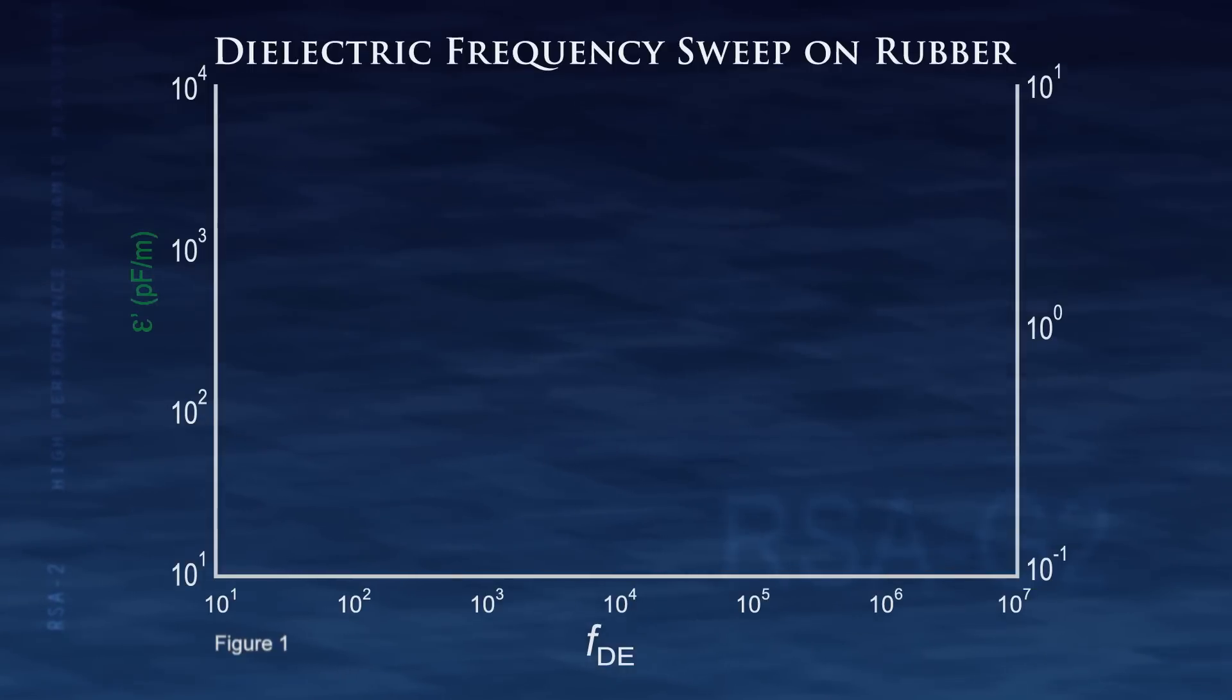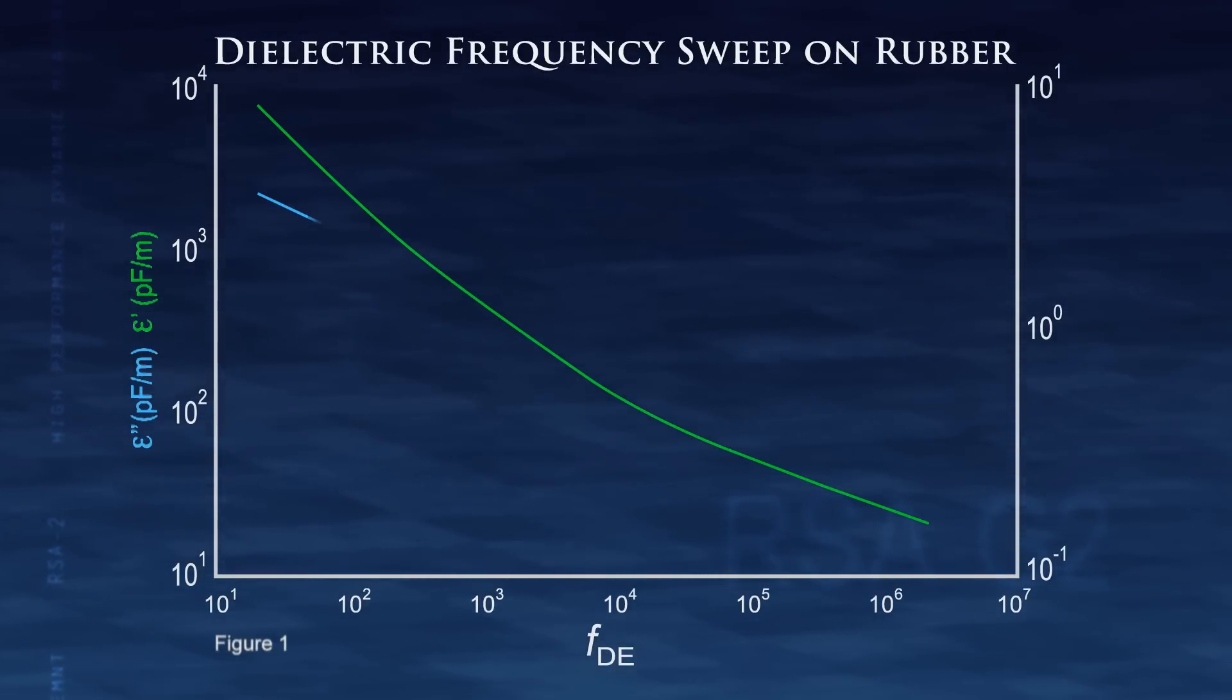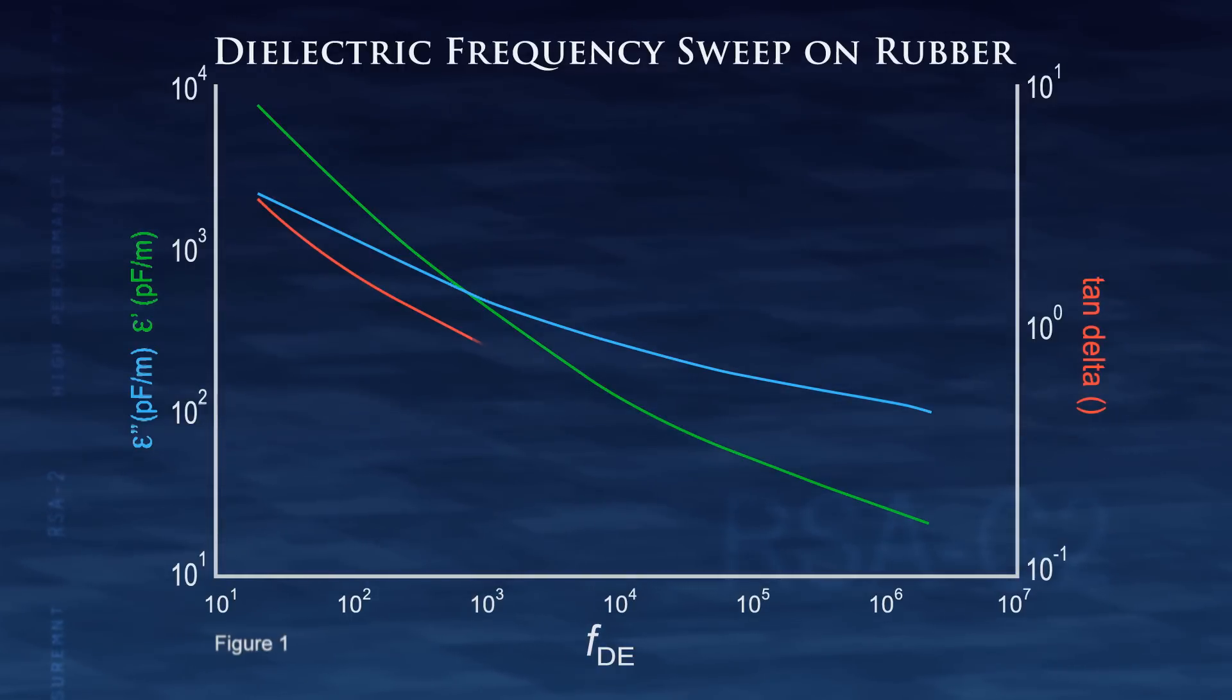Figure 1 shows an example of a dielectric frequency sweep run on a rubber sample under ambient conditions. Shown are the storage and loss permittivity and loss tangent over a frequency range of 20 to 2 million hertz.